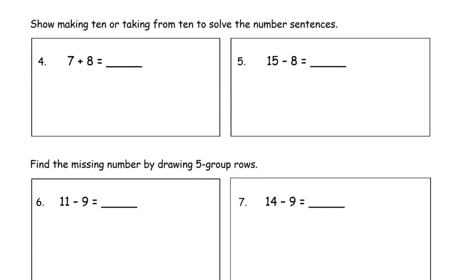Now we're going to show making 10 or taking from 10 to solve the number sentences. So we've done some making 10 to do addition, some taking from 10. And I'm going to use number bonds to show this. You could draw pictures to do this, but you have to show making 10. I'm going to show how to do it with number bonds. Remember when we added 7 to 8? If we're adding to 8, we need a 2 to make a 10. And 7 is 2 and 5. So we have 10 and 5. And I'm going to write that number sentence here. 10 plus 5 equals 15. That's how I got the 15.